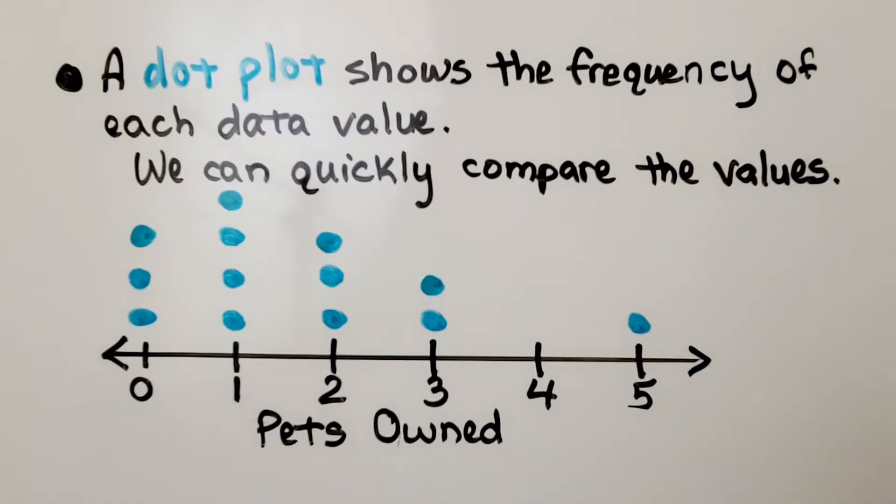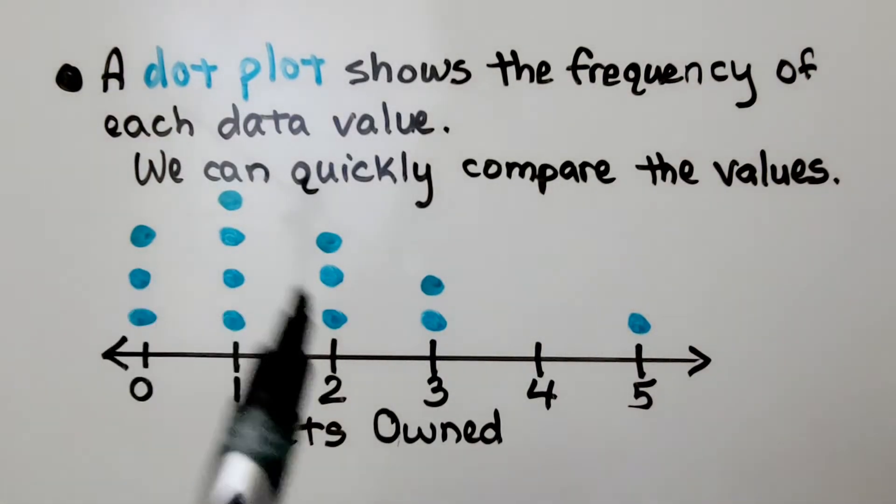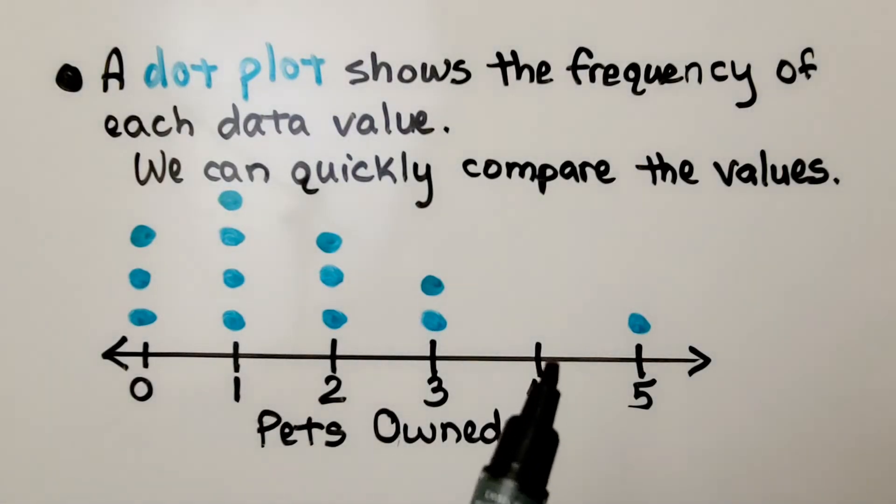A dot plot shows the frequency of each data value, and we can quickly compare the values. Here's a dot plot of pets owned by some friends. We can see that most of the friends have zero, one, or two pets. No one has four pets, and only one person has five pets.